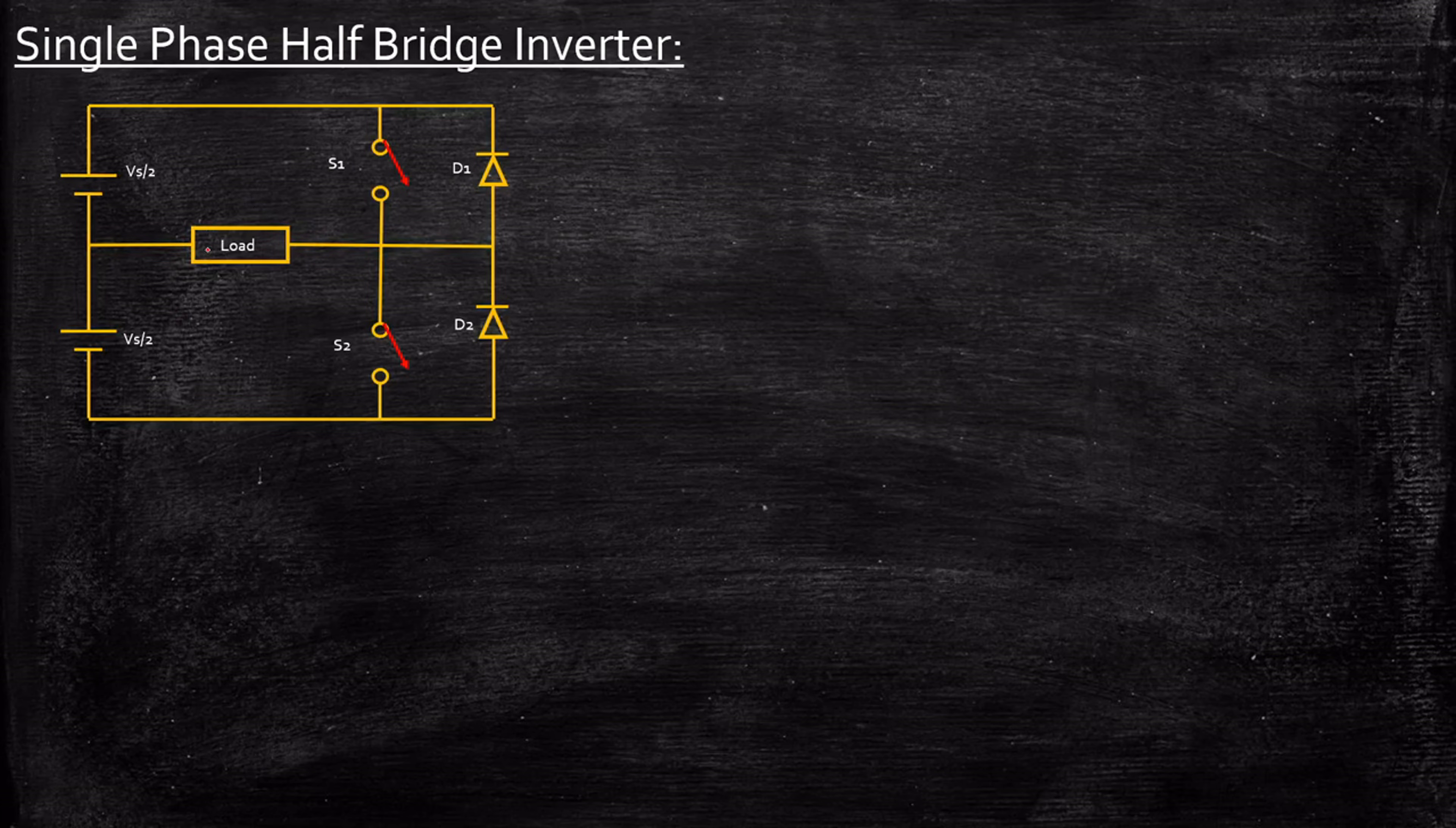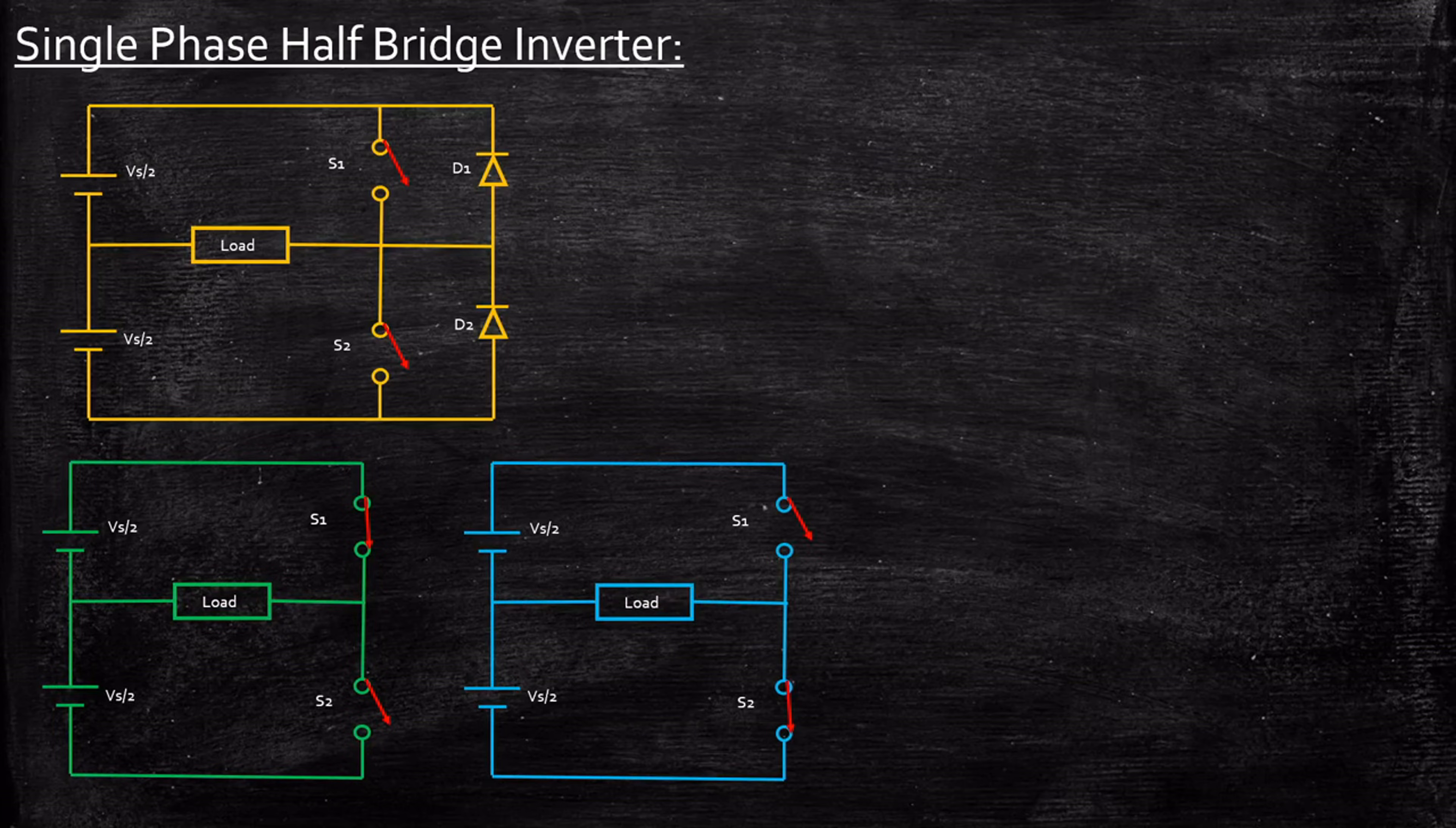We're going to consider a resistive load throughout to understand the operation. Now, what happens during two different time periods? Let's call this circuit number one and this circuit number two.